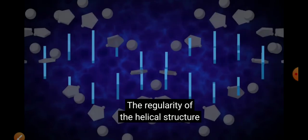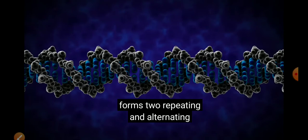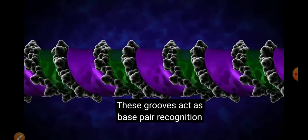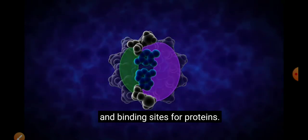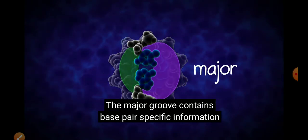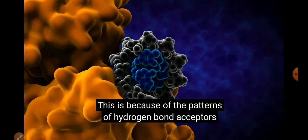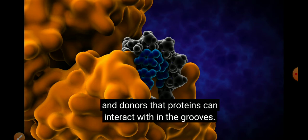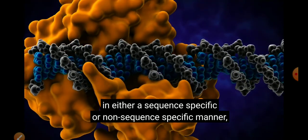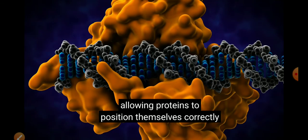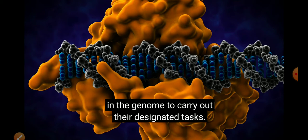The regularity of the helical structure forms two repeating and alternating spaces, called the major and minor grooves. These grooves act as base pair recognition and binding sites for proteins. The major groove contains base pair specific information, while the minor groove is largely base pair nonspecific. This is because of the patterns of hydrogen bond acceptors and donors that proteins can interact with in the grooves. In this way, the DNA can be acted upon in either a sequence specific or non-sequence specific manner, allowing proteins to position themselves correctly in the genome to carry out their designated tasks.